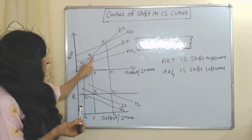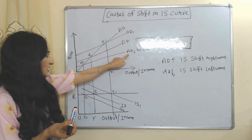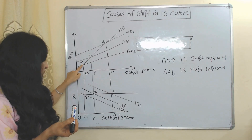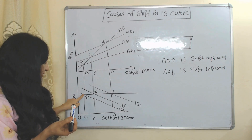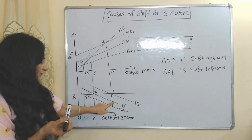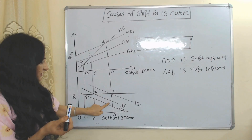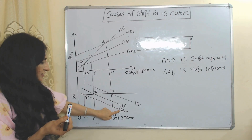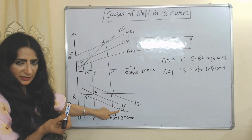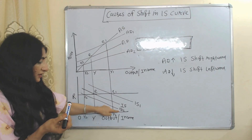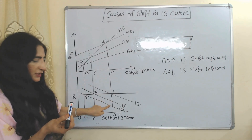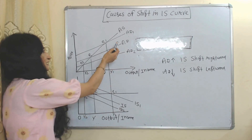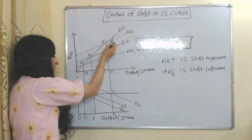When aggregate demand falls from AD to AD2, the new equilibrium point is E2. As aggregate demand falls, the IS curve shifts leftward from IS to IS2. This is our new IS curve which has shifted leftward due to the decrease in aggregate demand.